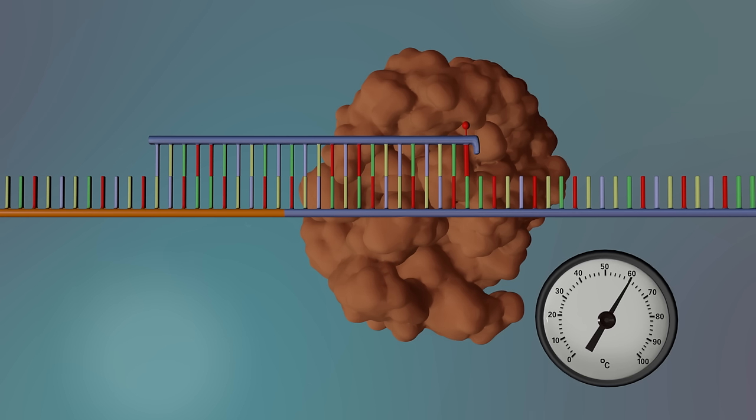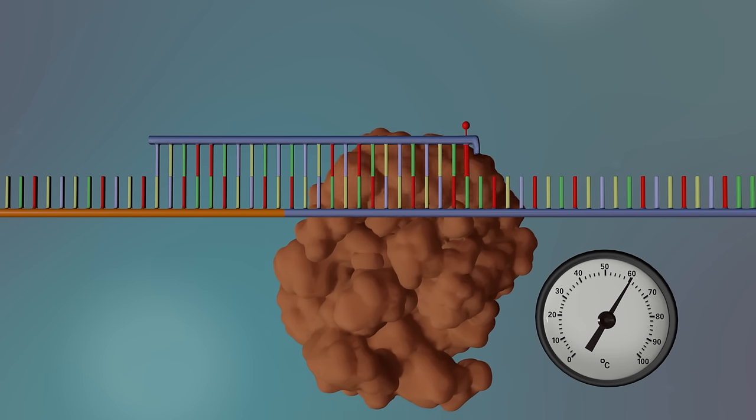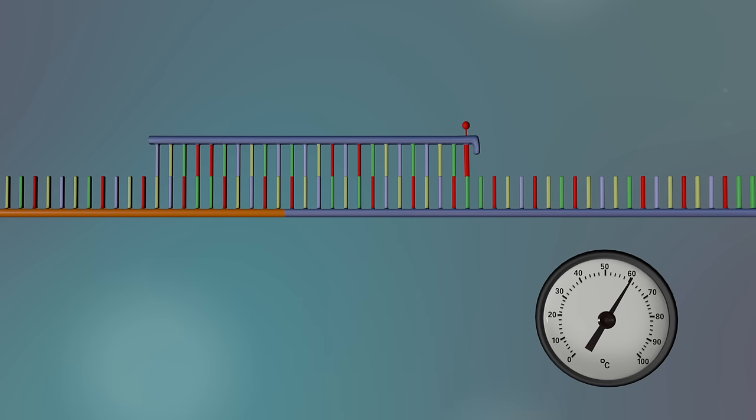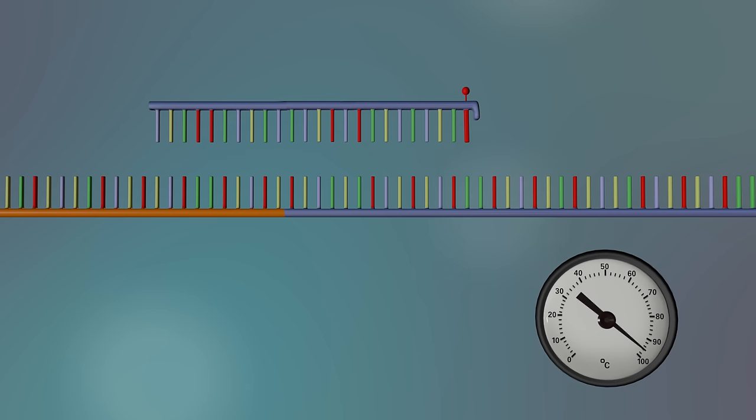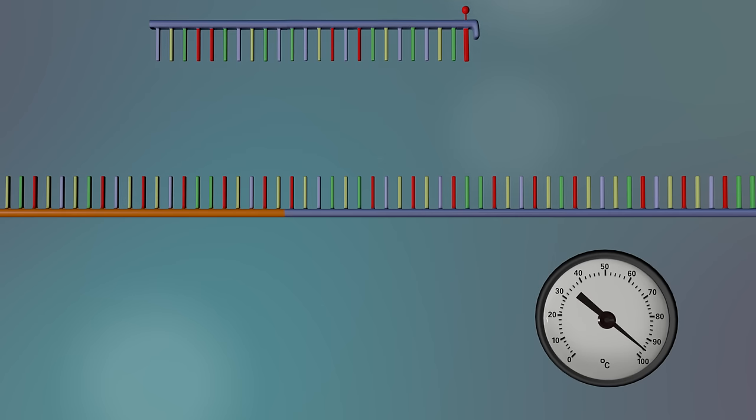Once a terminator base is added, the DNA polymerase enzyme stops making DNA and falls away from the strand. Everything is then heated to 96 degrees Celsius again to separate the new DNA strand from the original strand.